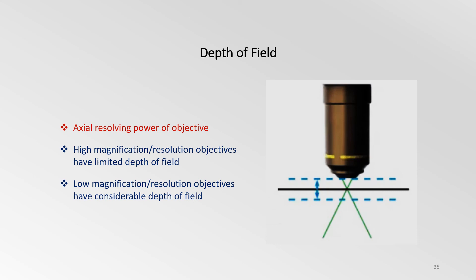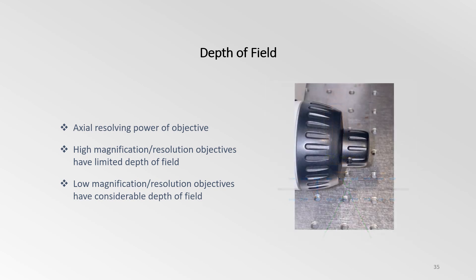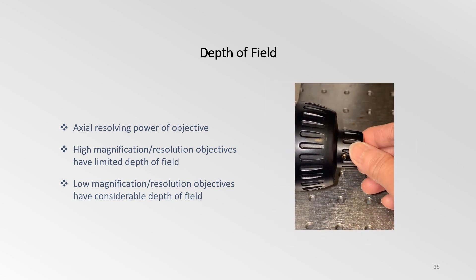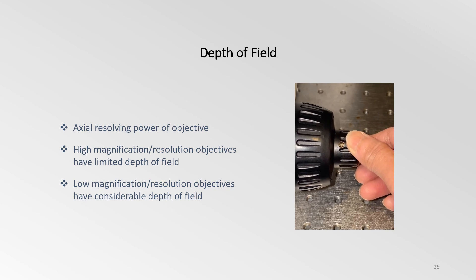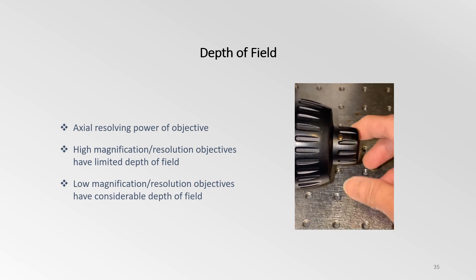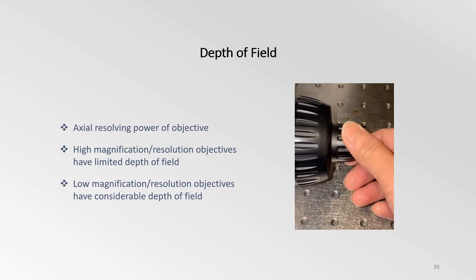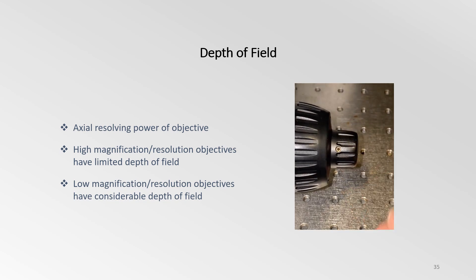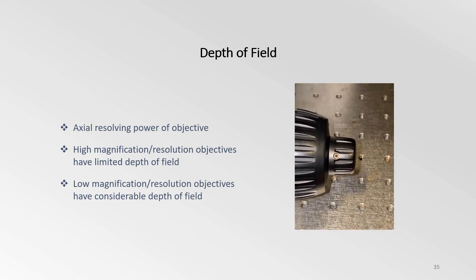A higher NA will give a higher resolution, but the depth of field becomes considerably smaller. Low-resolution objectives have larger depths of field. This is exactly the reason why the fine focus adjustment on the microscope must be set delicately and precisely for objectives with high NA. Whereas for low NA, a few turns of the focus knob may seem to make no difference to the image.